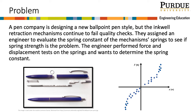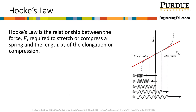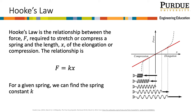In order to work on this problem, we will need to understand a little bit about springs. Let's consider Hooke's law. Hooke's law is the relationship between the force f required to stretch or compress a spring and the length x of the elongation or compression. The relationship is f equals kx. Notice that this is a linear relationship. The slope of the line is k and represents a constant characteristic of the spring itself, called the spring constant, that can be used to determine the stiffness of the spring. The y-intercept is zero, which is when the spring is in its neutral state and is neither elongated nor compressed.